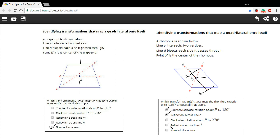So we did get two on this one, and that is a little bit of practice with identifying transformations to map figures onto themselves.